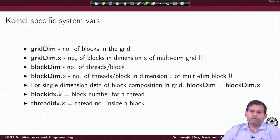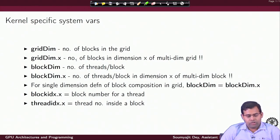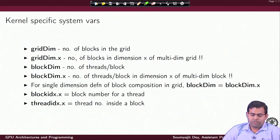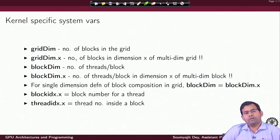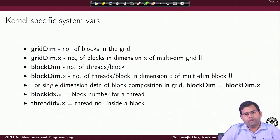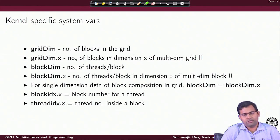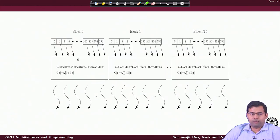Things can be up to 3 dimensions — I can have a grid defined in 3 dimensions. gridDim refers to the number of blocks in the grid; gridDim.x means the number of blocks in dimension x of a multidimensional grid. blockDim is the number of threads per block; blockDim.x means the number of threads per block in dimension x of a multidimensional block. For a single dimension, blockDim and blockDim.x are the same, and threadIdx.x and blockIdx.x refer to the single linear dimension.